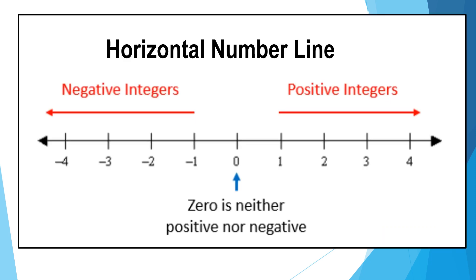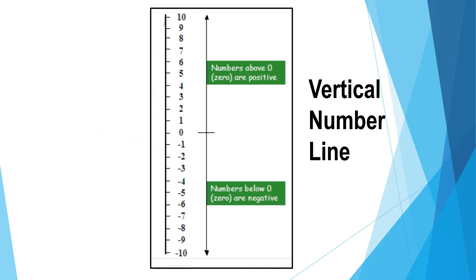On a horizontal number line, the positive integers are on the right, zero is in the middle, and zero is neither positive nor negative. The negative integers are on the left of zero. On a vertical number line, numbers above zero are positive, and numbers below zero are negative.